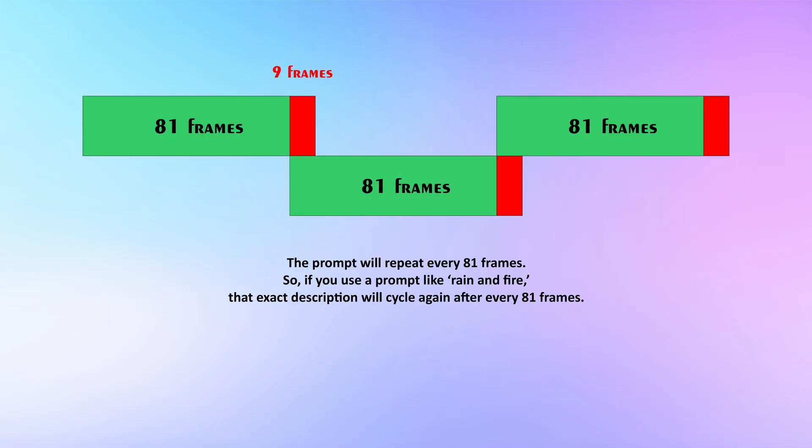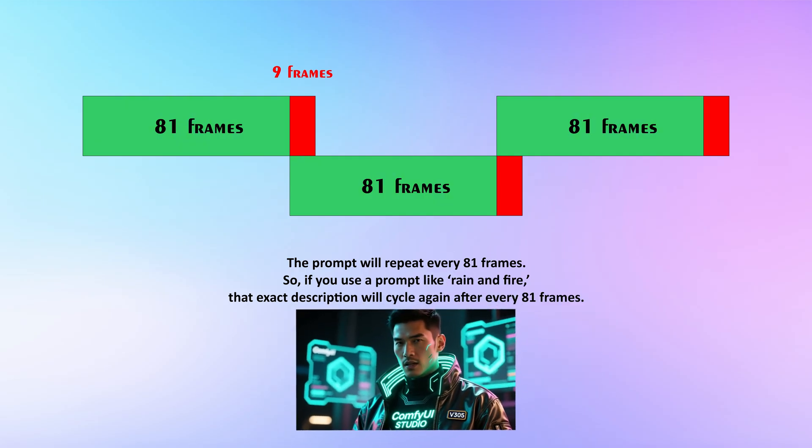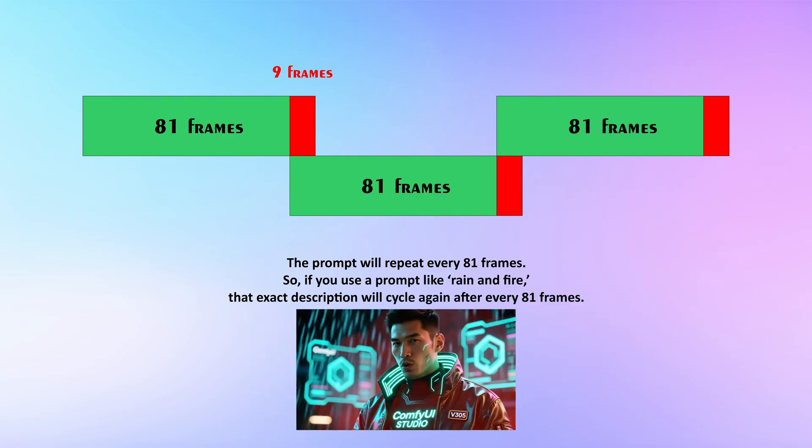Now, a quick word on how rendering actually works. The Infinite Talk workflow generates videos in chunks of 81 frames. Each chunk is stitched together automatically, so your animation can continue infinitely without flickering or breaking the smoothness. This is what makes truly endless talking videos possible, no matter the length. The prompt will repeat every 81 frames.